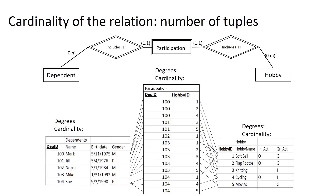Looking at our example of dependents and hobbies, let's examine the degree and cardinality of each relation. The dependent relation has a degree of four, because there are four attributes, and a cardinality of five, because there are five tuples. The hobby relation has a degree of four attributes and a cardinality of five tuples. Finally, the participation relation — the gerund — has a degree of two and a cardinality of fourteen, where each tuple represents a dependent participating in a hobby.